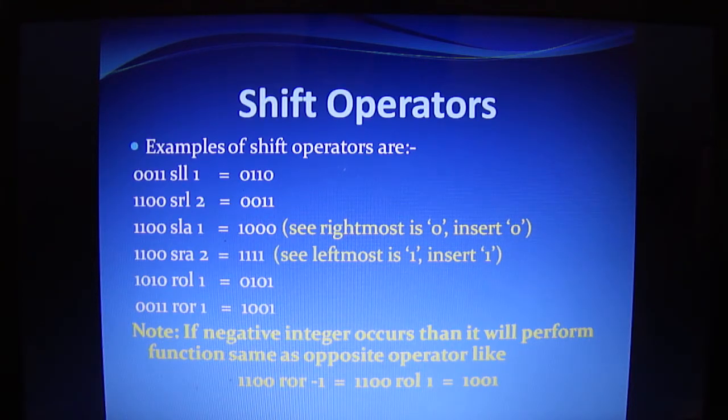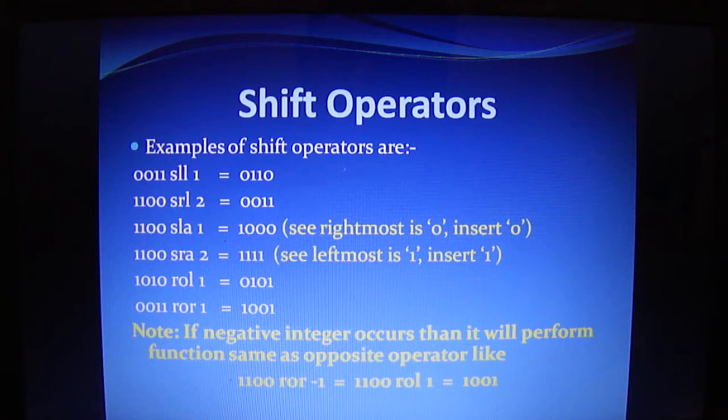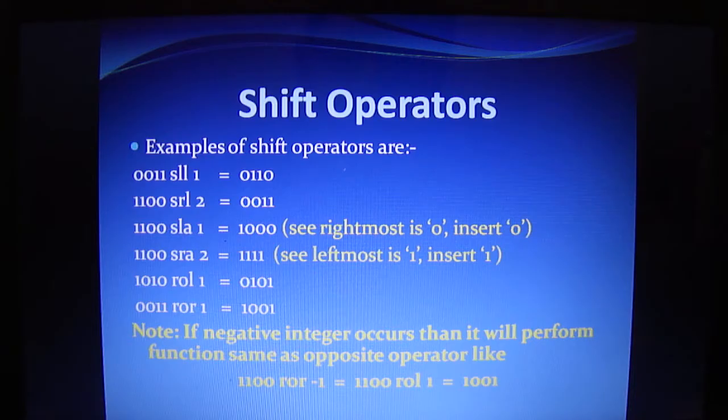If you are using SLA 1 that is 1100 SLA 1 gives 1000, it will see the value from the right side which is 0 in this and it will shift the bit towards left and insert 0 on the right.